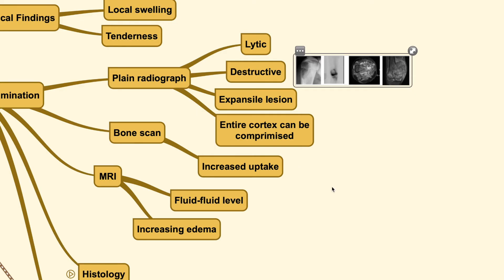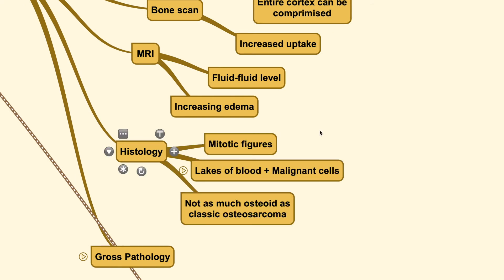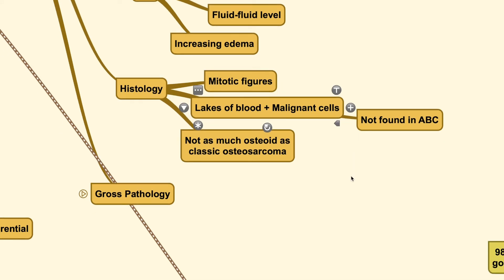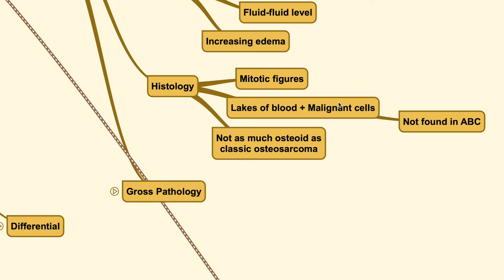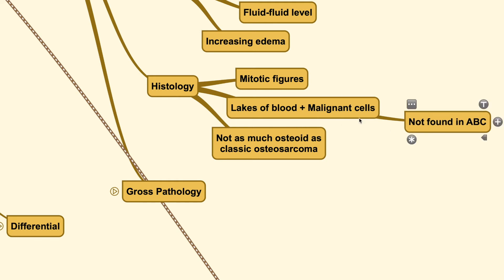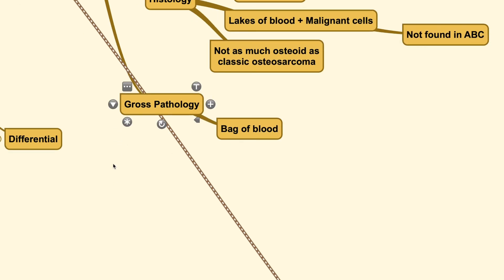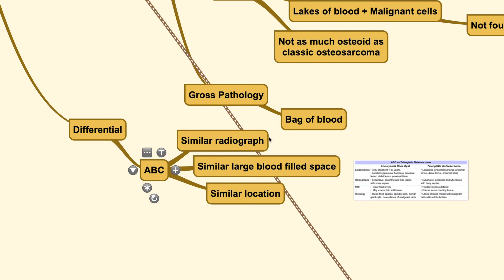For the mitotic figures, because this tumor is associated with blood — angio meaning vascular — you can see mitotic figures but also lakes of blood in the histological specimens. What makes it different is that you can also see malignant cells within those lakes of blood, distinguishing it from ABC where you would not find any malignant cells. Histologically, osteoids are not as prominent as in the classic osteosarcoma. For gross pathology, you would find what is described as a bag of blood — a very bloody tumor.